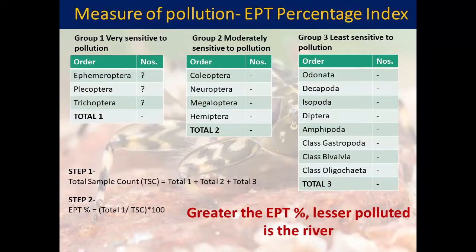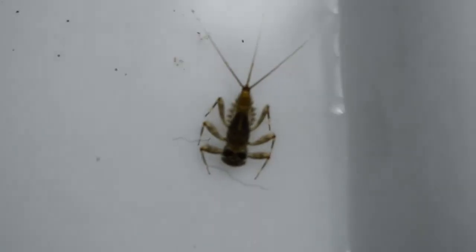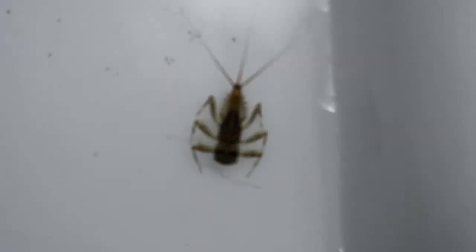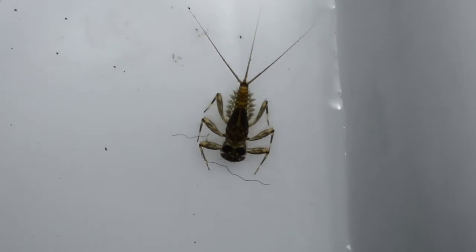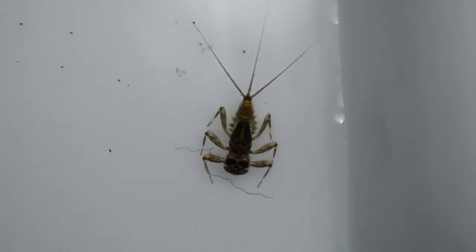In simple terms, EPT refers to Ephemeroptera, Plecoptera, and Trichoptera. The interesting thing is that although these are macroinvertebrates, they are commonly called river flies. You might wonder why they are called flies — and indeed, they are called flies.